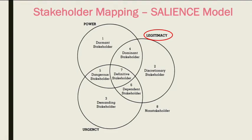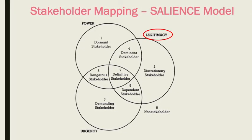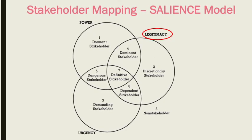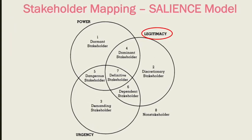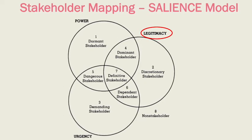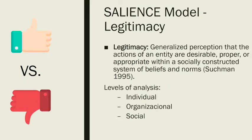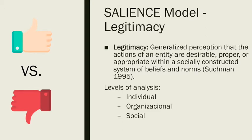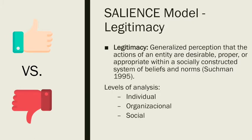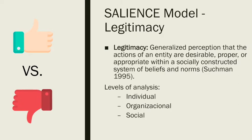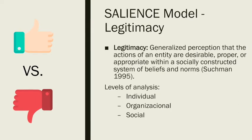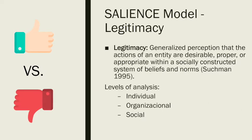Legitimacy, the second circle of your Venn diagram, is another category that matters when classifying stakeholders. There are actors that give legitimacy, while others take it away. Legitimacy can be defined as the perception that the general public has over a company's actions when they are deemed proper or desirable according to collectively accepted norms and beliefs. A company that sells beauty products can be legitimate among women for skin health benefits, but if products are found to use animal testing, they might lose their legitimacy.